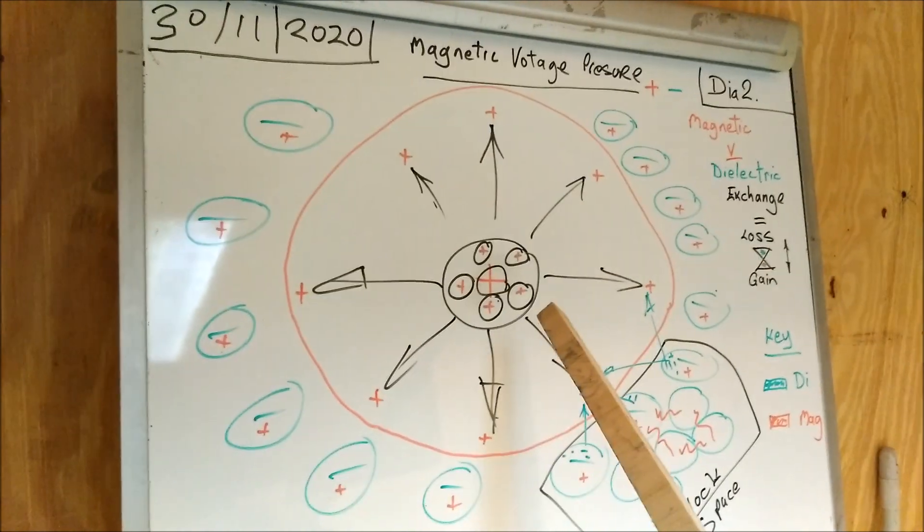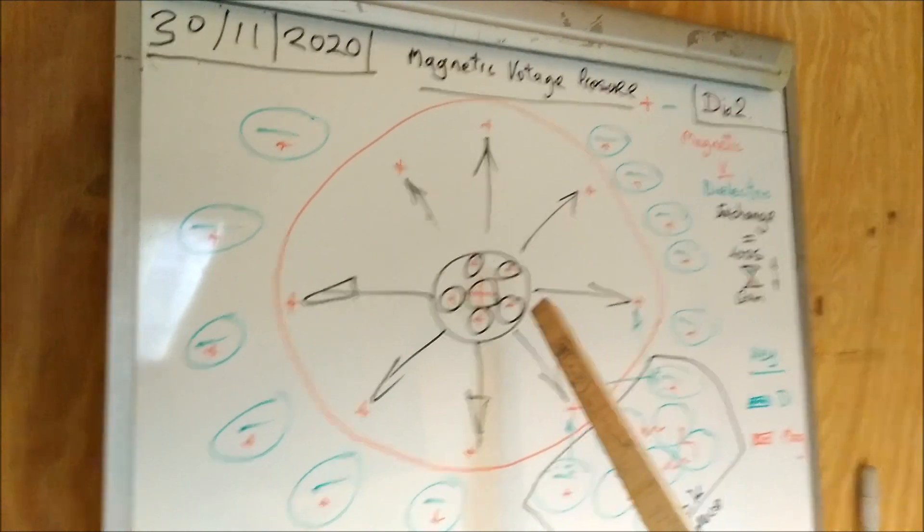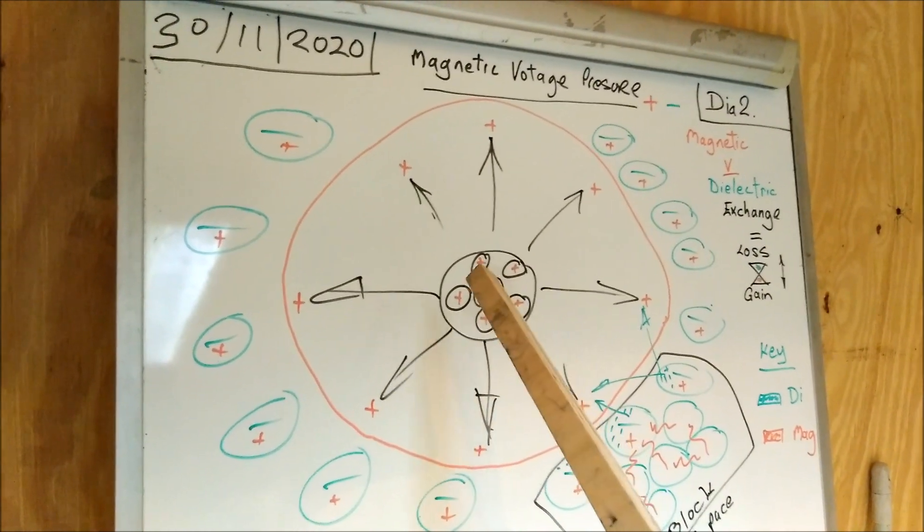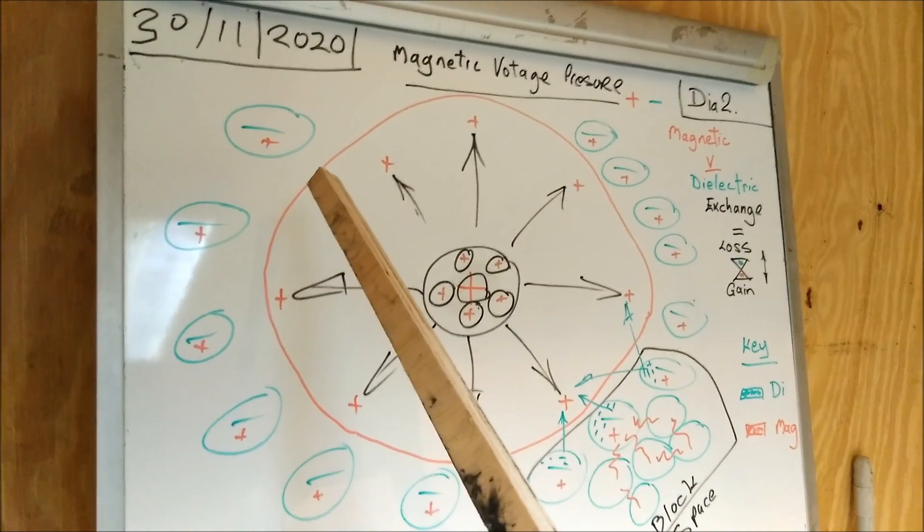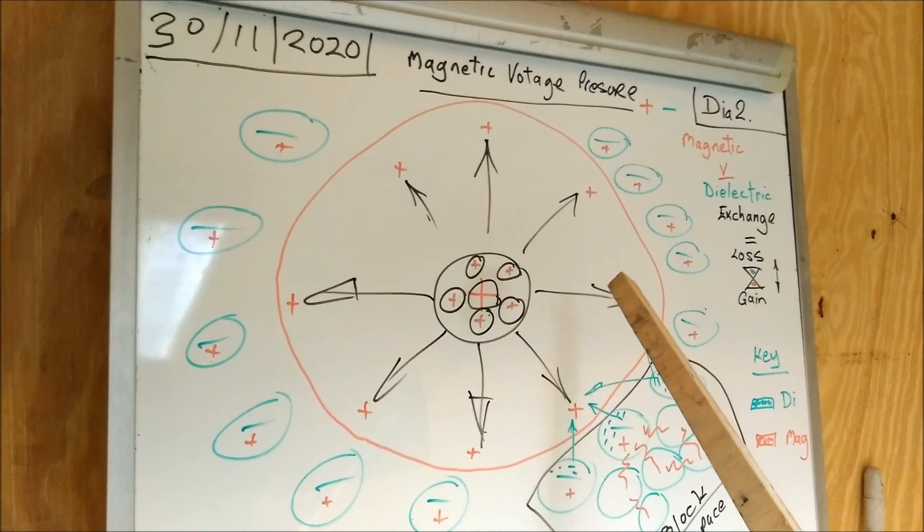What it does is create a reaction with the metal in the scaffold tubes, and there's a reaction in the ether if you like, or there's a magnetic flux that goes out so far.